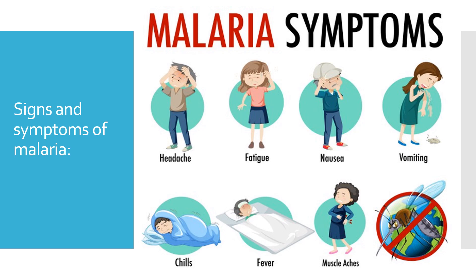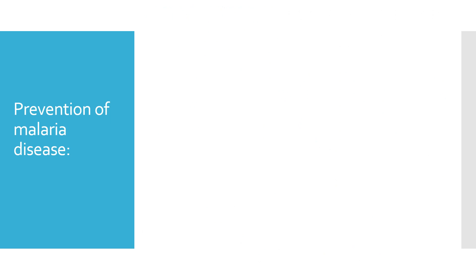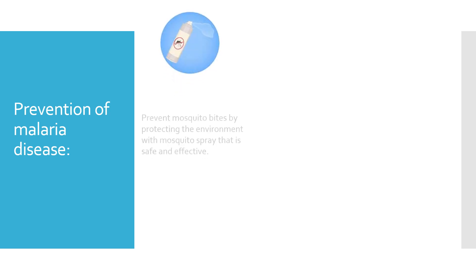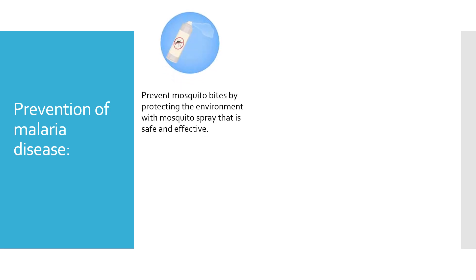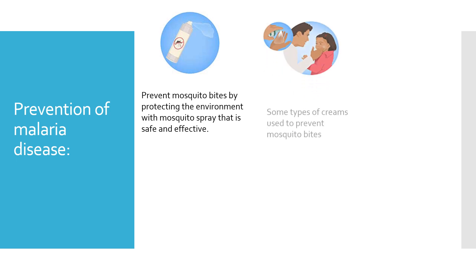Those are the main signs and symptoms in children and adults. To prevent malaria, there are many approaches. You can protect the environment using mosquito spray that is safe and effective. You can also use topical cream to prevent mosquito bites, which should be used with a doctor's advice.